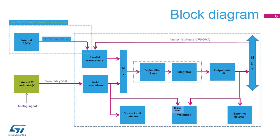The entire digital filter for sigma-delta modulators interface consists of 8 serial transceivers, 4 sync filter parts and integrators, 4 output data units, 4 analog watchdogs, 8 short-circuit detectors, 4 extreme detectors, and 8 parallel data input registers. For STM32L45X and 46X devices, the configuration is only one-half: 4 transceivers and 2 filters and integrators. The STM32L45X, 46X, 49X, and 4AX devices feature parallel inputs from internal ADCs.